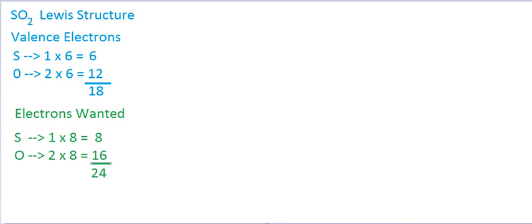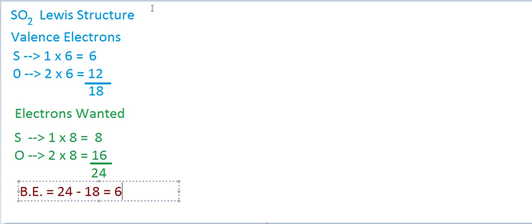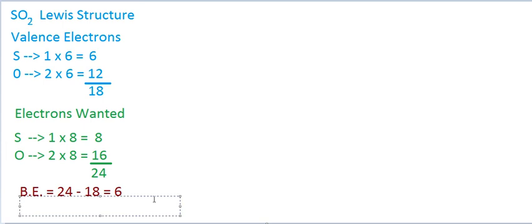Let's do the math and keep track of everything. The difference between electrons wanted and electrons present is the number of bonding electrons — the minimum needed so all octets are filled. So bonding electrons equals 24 minus 18, which is 6. Dividing by 2 — because there are 2 electrons per bond — gives us a minimum of 3 bonds in this molecule.